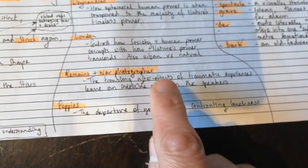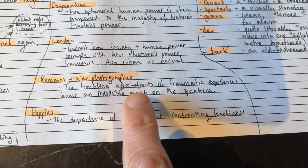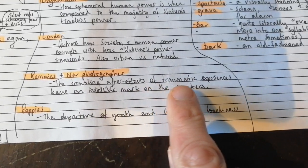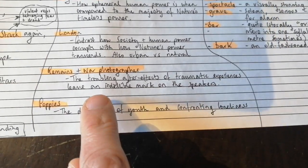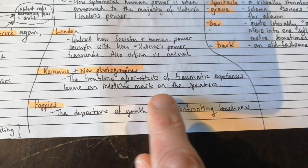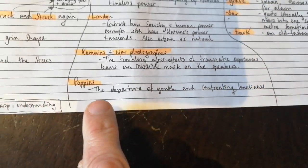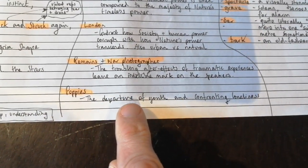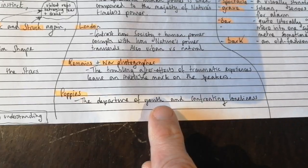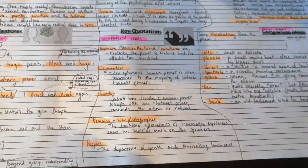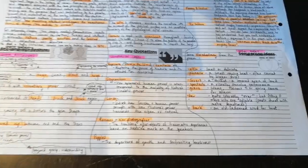Remains and War Photographer, both of these are good comparisons. That is the troubling after effects of the traumatic experiences that they leave an indelible mark on the speakers. And Poppies, perhaps you could compare the departure of youth and confronting loneliness, which both poems deal well with.